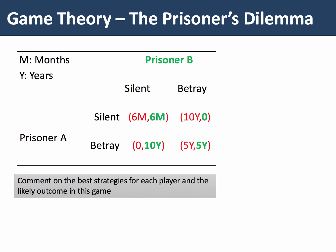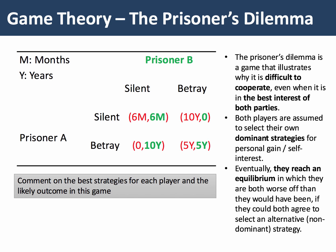To comment on the best strategies for each player and the likely outcome in the game: the Prisoner's Dilemma tells us that the equilibrium is when each player is taking the best possible action for himself or herself, given the actions of the other player. There is a dominant strategy — the unique best strategy regardless of the other player's actions.